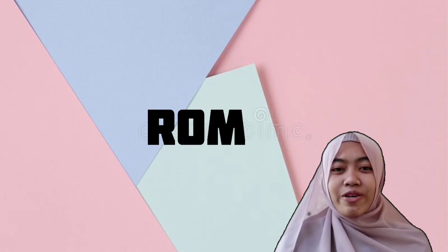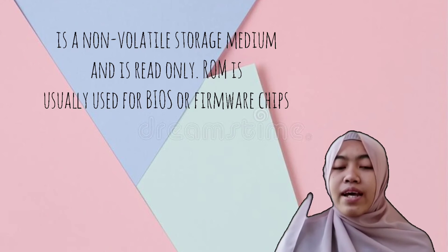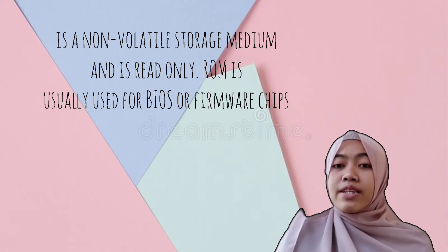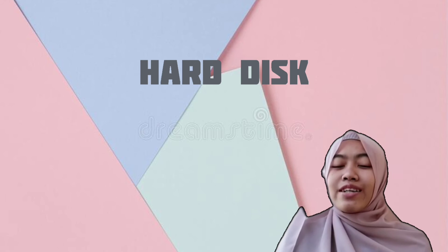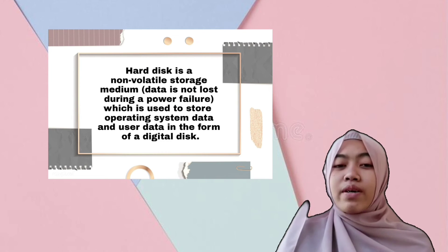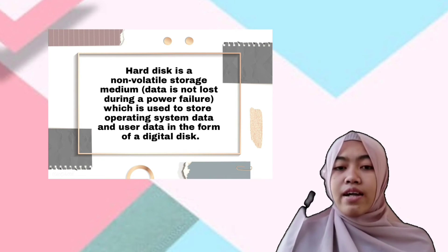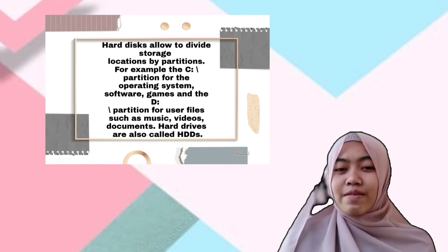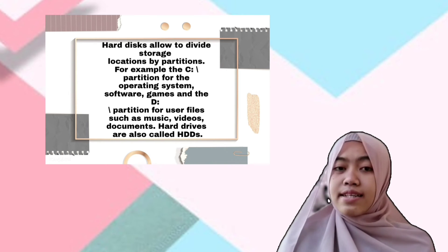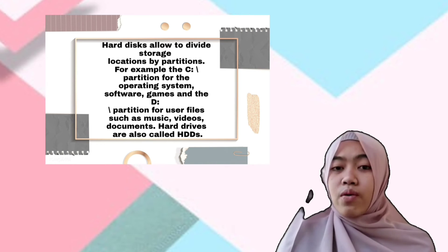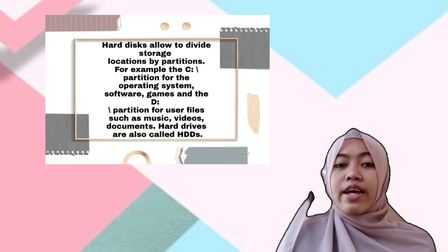ROM — Read-Only Memory — is a non-volatile storage medium. Data is not lost when the power is turned off and it is read-only. ROM is usually used for the BIOS or firmware chip. HDD is a non-volatile storage medium; data is not lost during a power failure, and it is used to store operating system data and user data in the form of digital disks. HDD allows the user to deploy storage locations by partition. For example, the C partition for the operating system, software, and games, and the D partition for user files such as music, videos, and documents. Hard drives are also called HDDs.